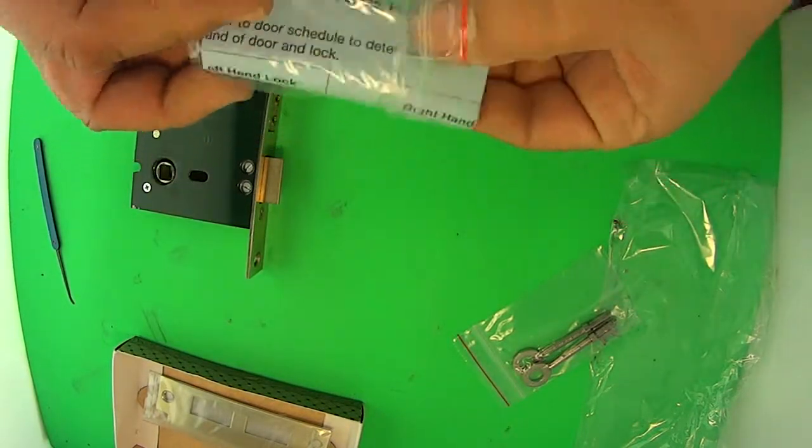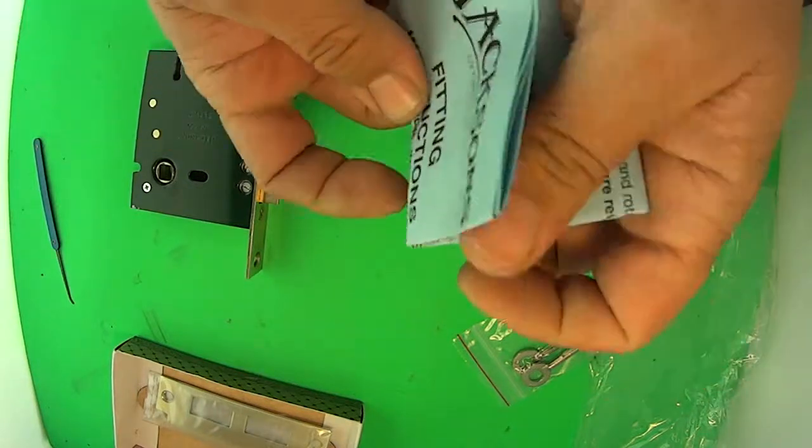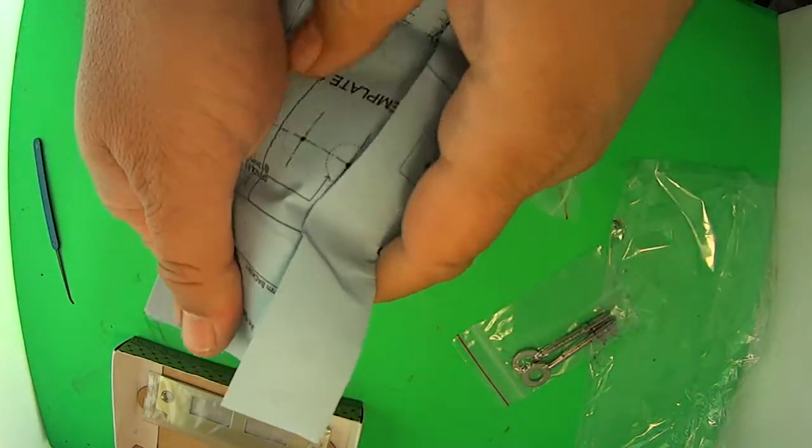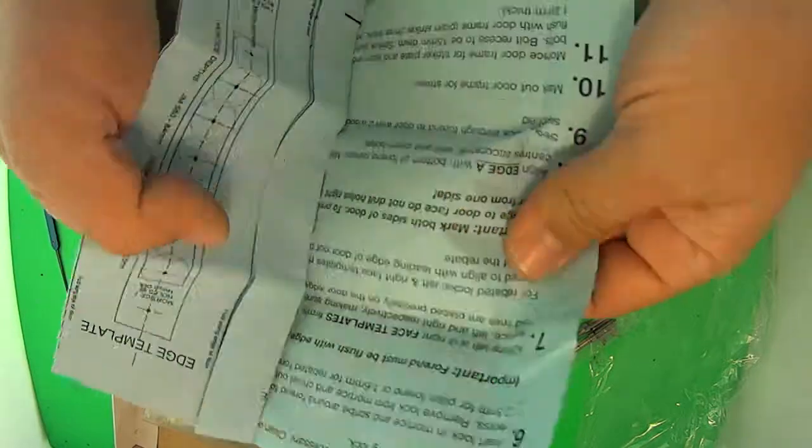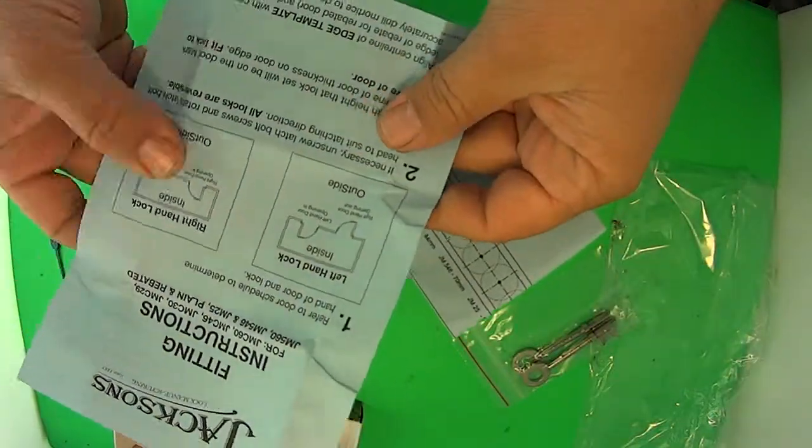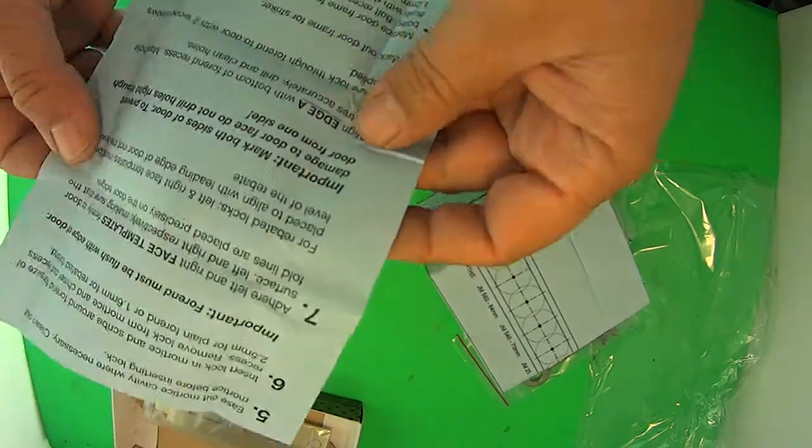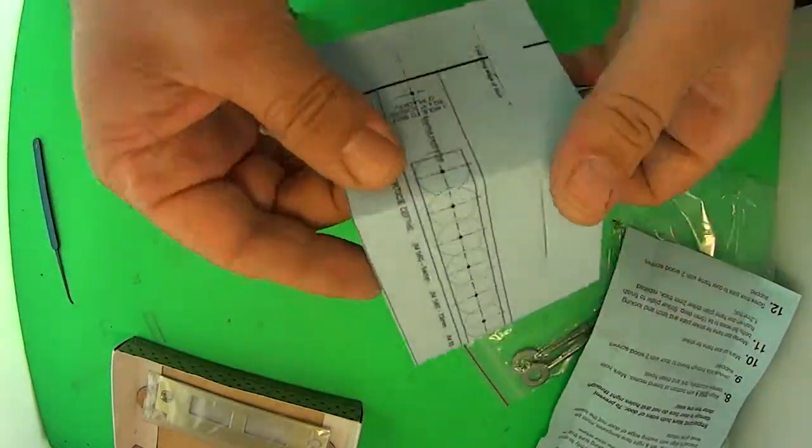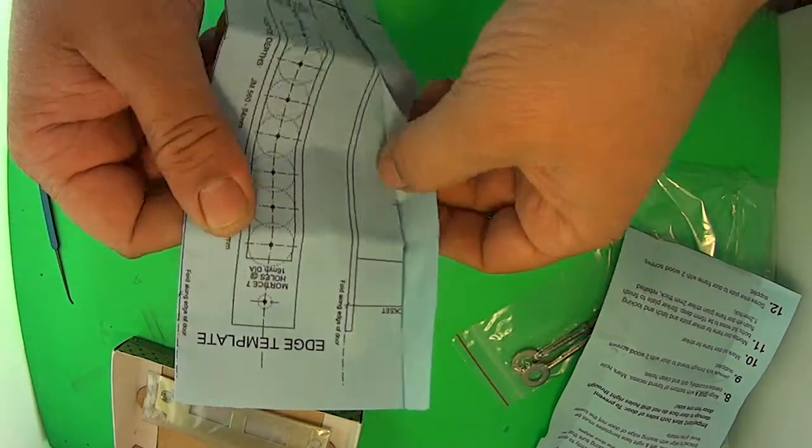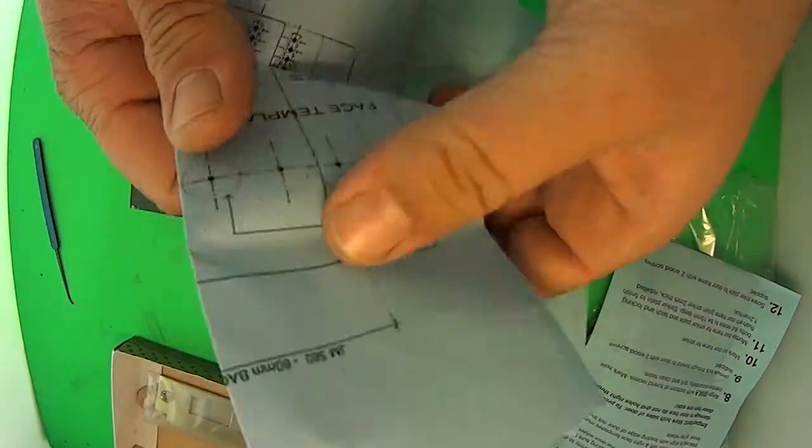The instructions are included here as well. It tells you about handing, which I'll show you how to do now. It's on the handing. This is on the installation. You can see the template for different doors.